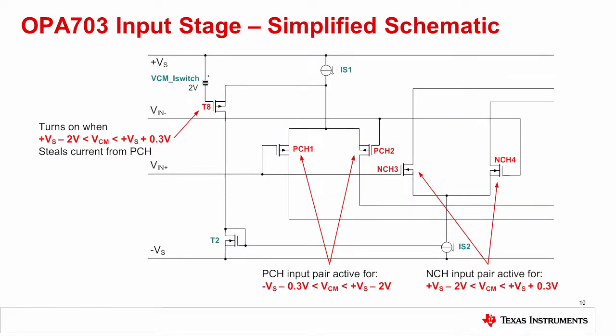Let's analyze how two separate p-channel and n-channel input differential pairs can be used to make a rail-to-rail amplifier. The key idea is that the p-channel input pair can have a common mode range slightly below the negative supply, and the n-channel input pair can have a common mode range slightly above the positive supply. A p-channel device, T8, is used in this case to control which of the two input pairs is actively biased.